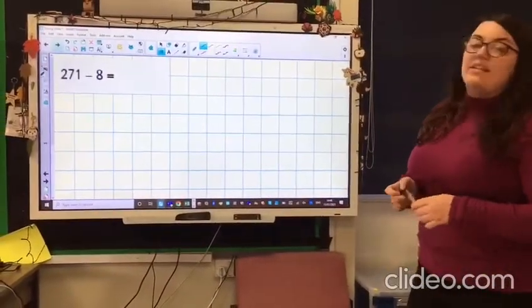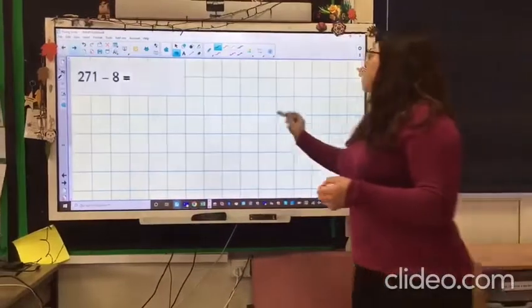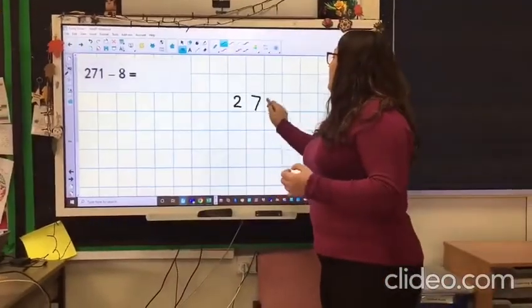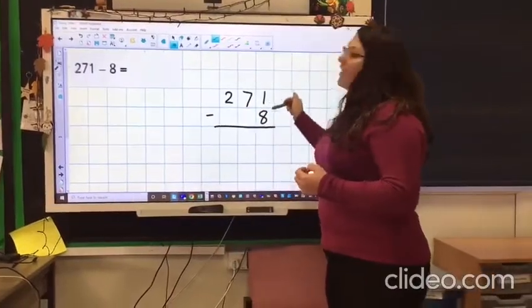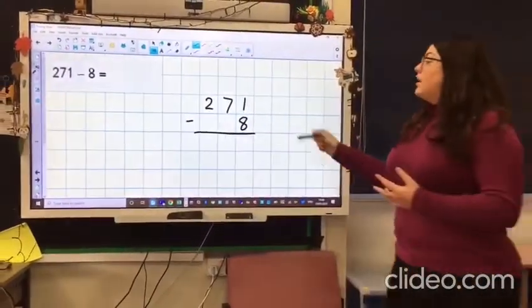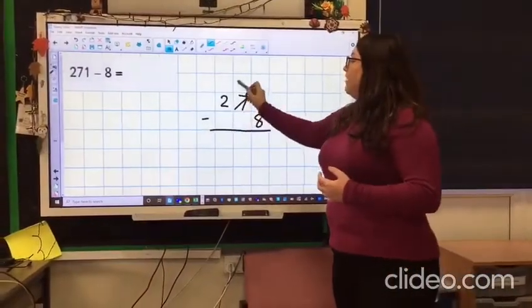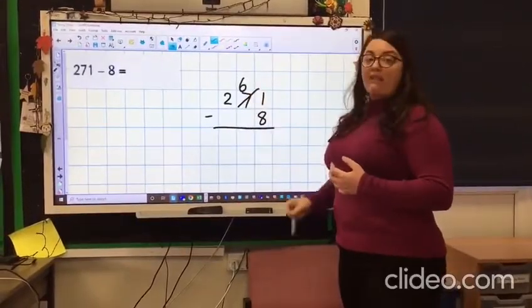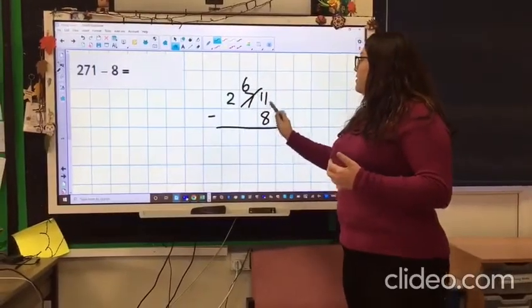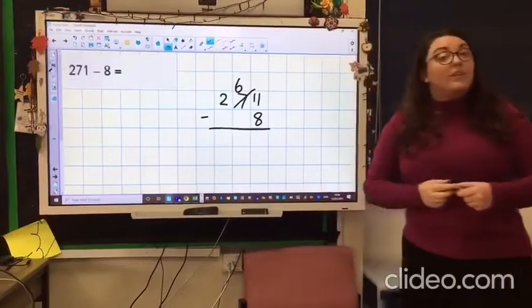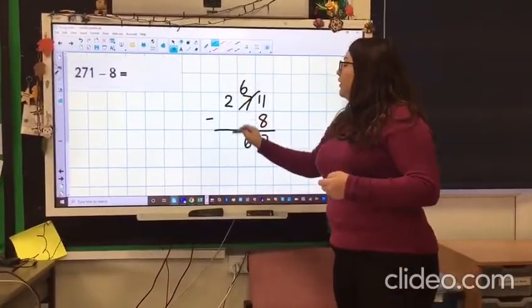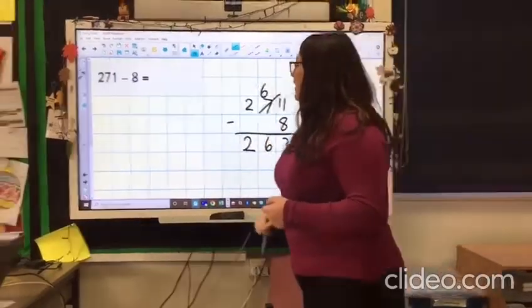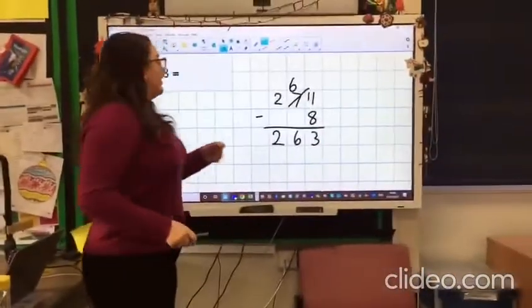Okay, 271 take away 8. Again, you could probably do this counting backwards, but just in case you did the column method: 1 take away 8 you can't do, so we go next door, cross it out, replace it with a 6, carry over your 1. So now it's 11 take away 8, which is 3. 6 take away nothing is 6, 2 take away nothing is 2. So your answer should be 263.